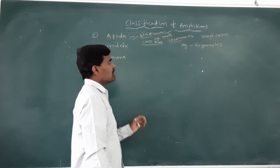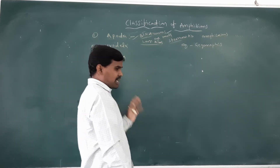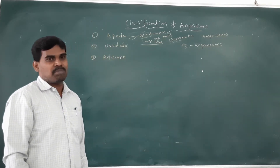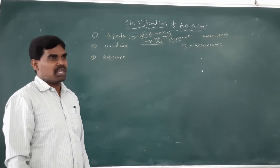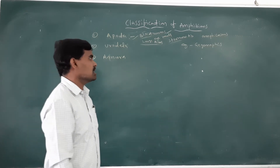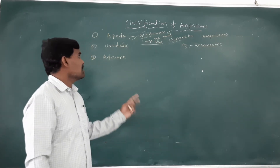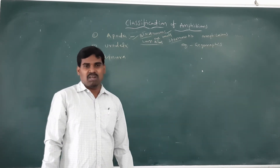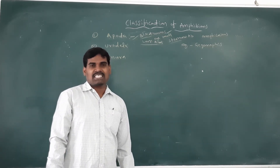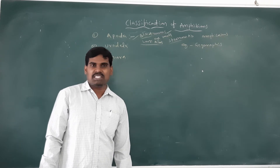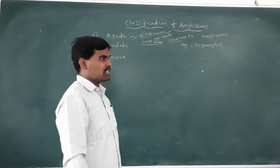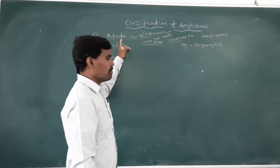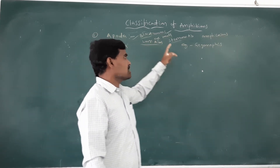Sternum is absent. The vertebra — antisealer style of the vertebra is present. External fertilization, development is direct. Examples of Apoda class.